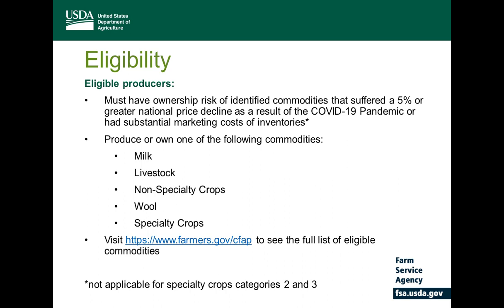FSA has identified commodities eligible for payments by identifying those that have experienced a five percent or greater national price decline as a result of COVID-19, or commodities that have had substantial marketing cost inventories. Please note that this price decline requirement is not applicable for specialty crop categories two and three. FSA sought to identify all available price data including prices collected by USDA and commodities traded on futures markets.